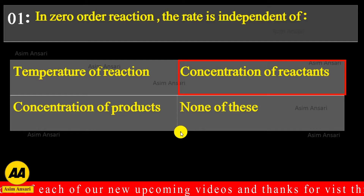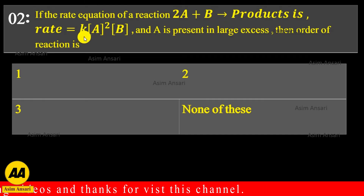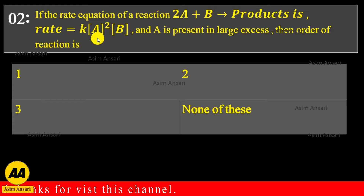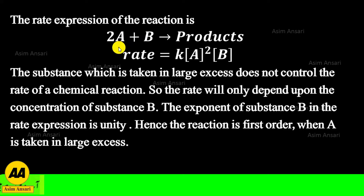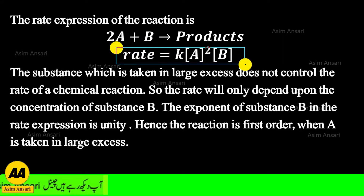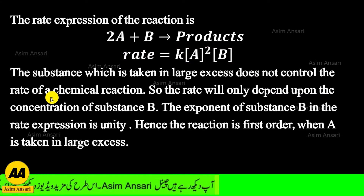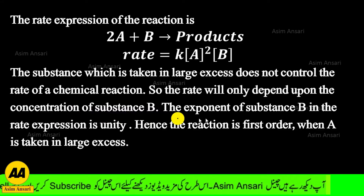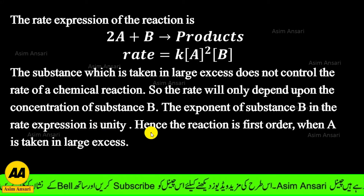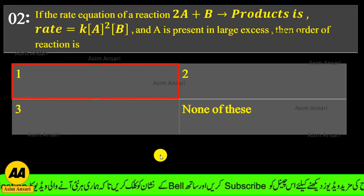Second MCQ: If the rate equation of a reaction 2A + B → product is rate = K[A]²[B], and A is present in large excess, then the order of reaction is 1, 2, 3, or none of these? The substance taken in large excess does not control the rate of reaction. So the rate will only depend upon the concentration of B. The exponent of B in the rate expression is unity. Hence the reaction is first order when A is in large excess. So the order of reaction is 1.